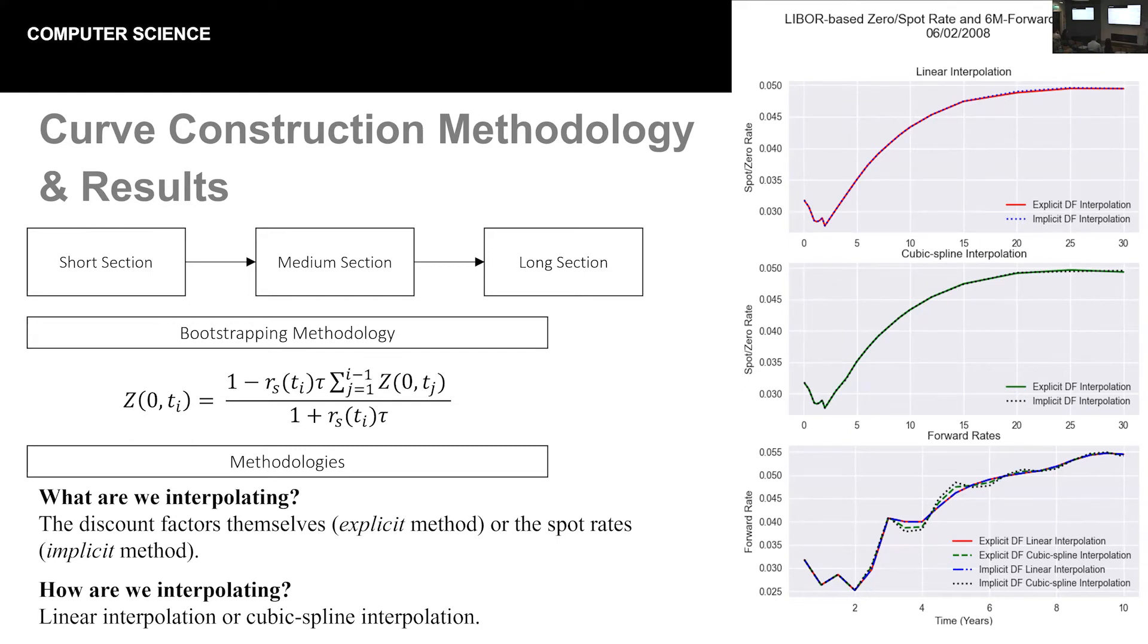Now, what does that mean? Well, it means that we're going to use the observed market rates in addition to the discount factors that we've calculated so far up to a certain point. And then we're going to use all of that information to infer the discount factor associated with the next time period. Now that all sounds great, but I present a problem.